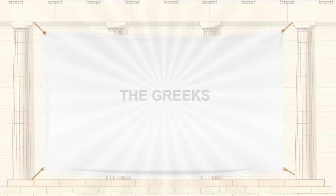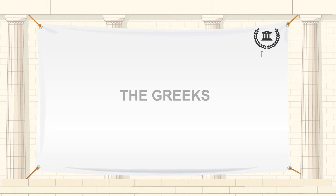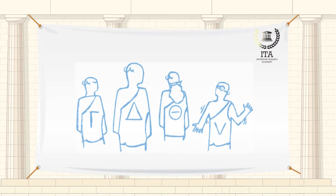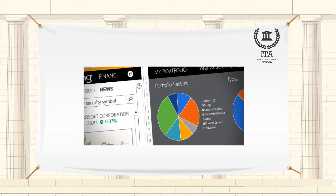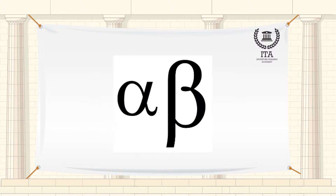The Greeks are vital tools in risk management. Each Greek measures the sensitivity of the value of a portfolio to a small change in a given underlying parameter, so that component risks may be treated in isolation and the portfolio rebalanced accordingly to achieve a desired exposure. See for example Delta Hedging. The use of Greek letter names is presumably by extension from the common finance terms alpha and beta.